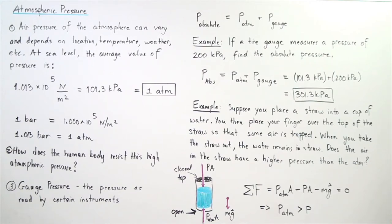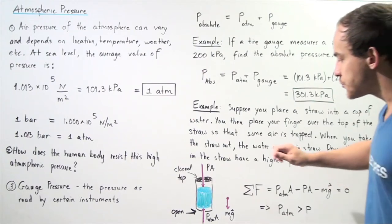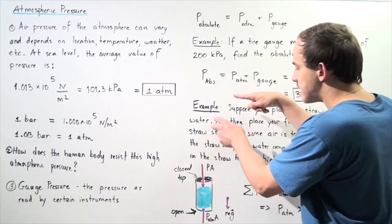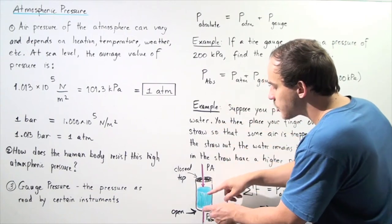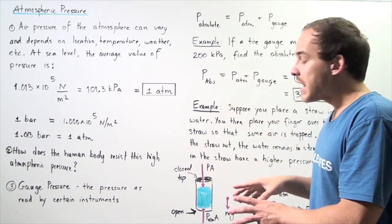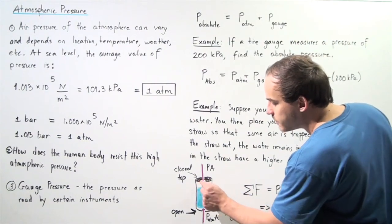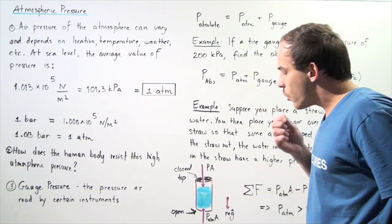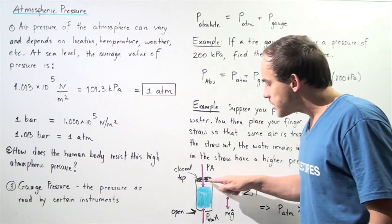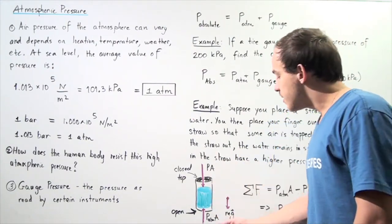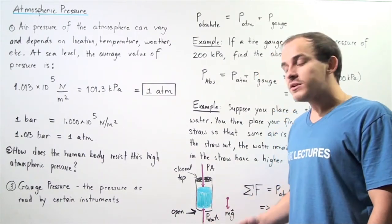The question is the following. Does the air in the straw have a higher pressure than the atmosphere? In other words, when we take our straw and place our finger on that straw and take that straw out, that water remains in that straw. That's because there is a pressure buildup in this space. The question is, is the pressure in this space greater, equal to, or smaller than the pressure found in the atmosphere?